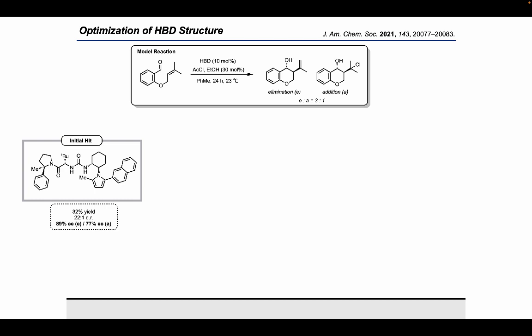In the first paper that's referenced, we go through the optimization efforts that we had in this area. I won't touch extensively on those results in great detail, but we started with this type of model substrate. These prenylated salicylaldehyde-derived compounds underwent cyclization as catalyzed by the combination of chiral hydrogen bond donors and hydrogen chloride, in this case produced in situ through the combination of acetyl chloride and ethanol. Under these conditions, we observed formation of two products, an elimination product, which I'll call E, as well as a chloride trapping product, which I'll call A, typically in a 3 to 1 ratio.